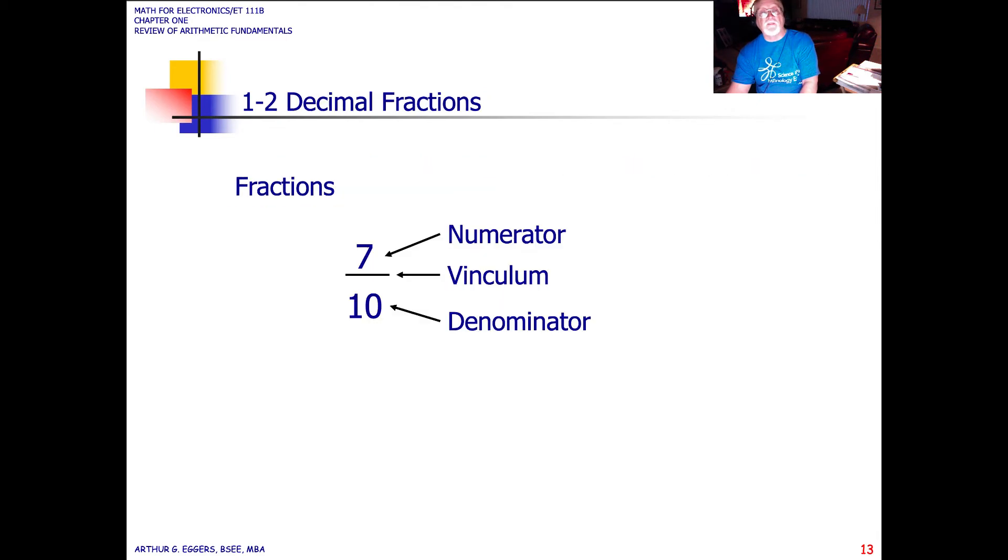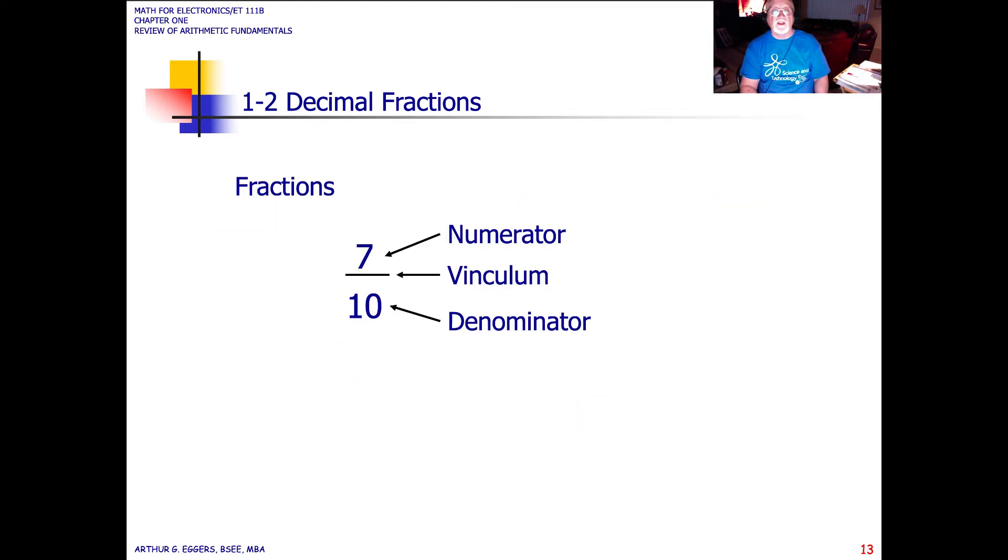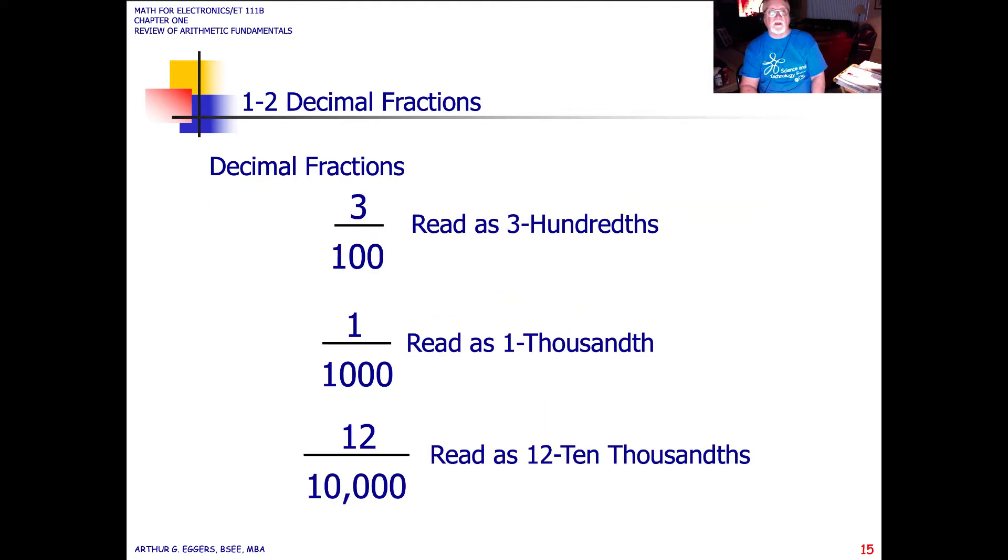When looking at fractions, we have to determine what the numerator is, what the denominator is. The little line between it, we call the vinculum. This becomes important when we look at decimal fractions because, in this case, we're looking at the whole number 10 in the denominator. So the denominator 10, in this case, seven-tenths, in this case, one-tenth, two-tenths, three-hundredths, one-thousandth, twelve-ten-thousandths. So we're using the 10 values.